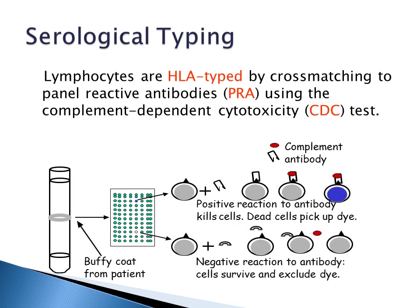Cross matching to known antibodies is performed on lymphocytes or the buffy coat in a 96-well plate where each well contains different known antibodies. If the antibody matches the cellular antigen, you'll have a positive reaction and complement dependent cytotoxicity, and the dead cells will take up the stain. If the antibody doesn't match the cellular antigen, there's no cytotoxicity and the cell will not take up the stain.